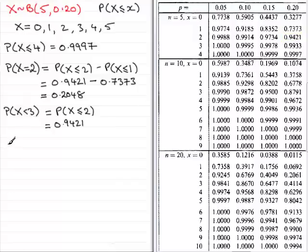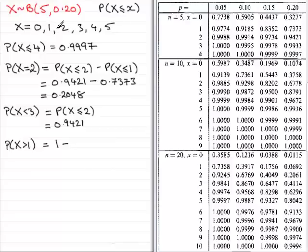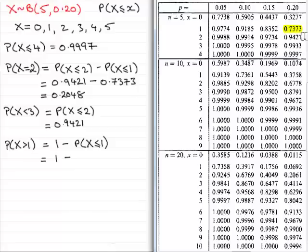What about the probability that X is more than 1? Being more than 1 means 2, 3, 4, and 5. To handle this, I use the complement: 1 minus P(X ≤ 1), because 1 is the sum of all probabilities. Looking up x = 1 under n = 5 and p = 0.20 gives 0.7373. So 1 minus 0.7373 equals 0.2627.